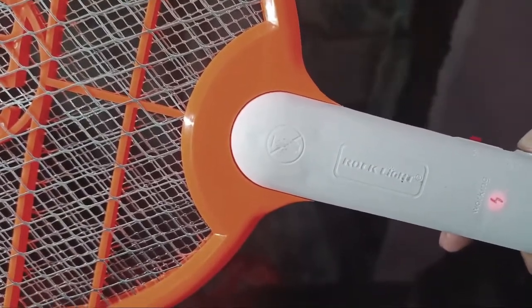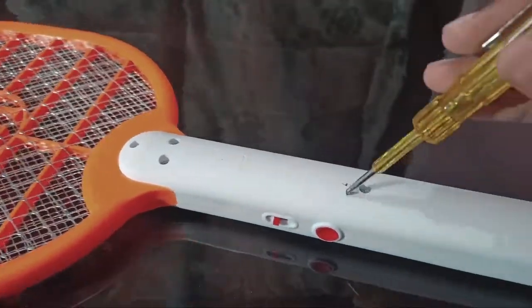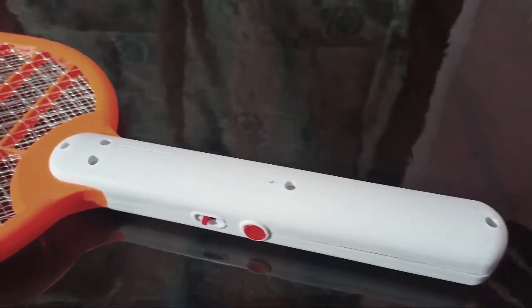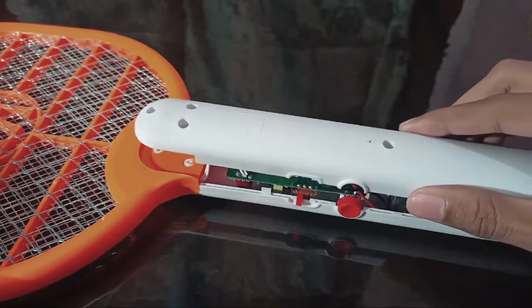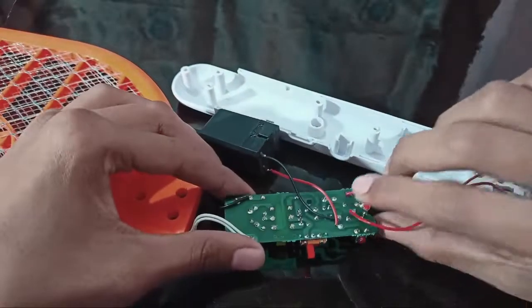When we switch it on and press this button, there is one more LED which starts glowing and indicates that now the racket is in working condition, as electricity is flowing through this mesh. Now if any conductor comes in contact with this mesh, you see we get an electric discharge over here.